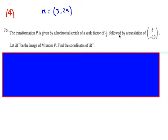We're going to have a look at a few more questions to do with transforming functions. Here's the first one. So we're given a point M — this is part B of a question. In part A, we were given the point M, which is (3, 29). Then we're asked to see what happens to this function as we have a horizontal stretch by a scale factor of a half, followed by a translation of (3, -10).